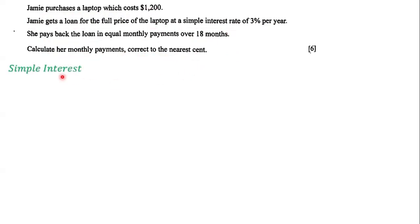First, we have this formula for simple interest. Simple interest equals P times R times T over 100, where P stands for principal, R stands for rate, and T stands for time.